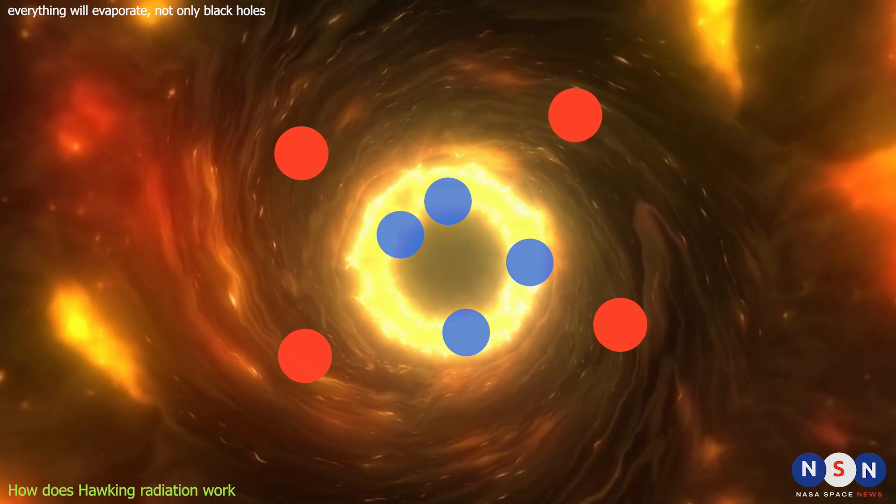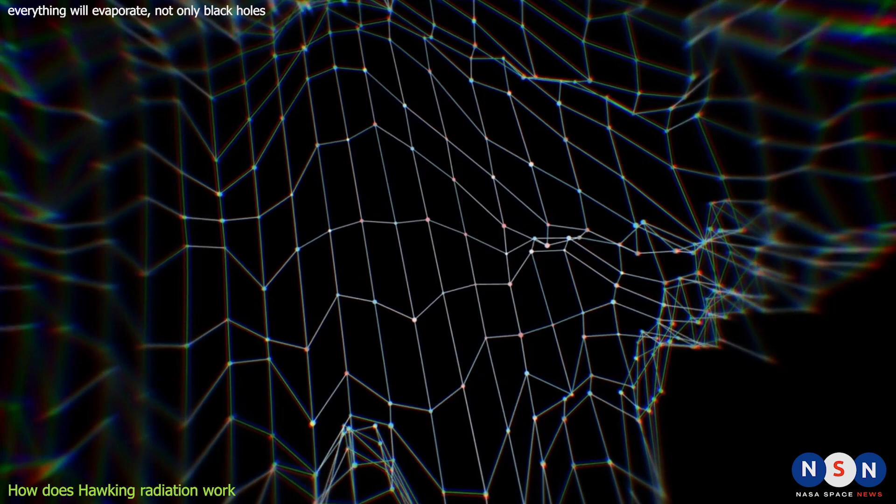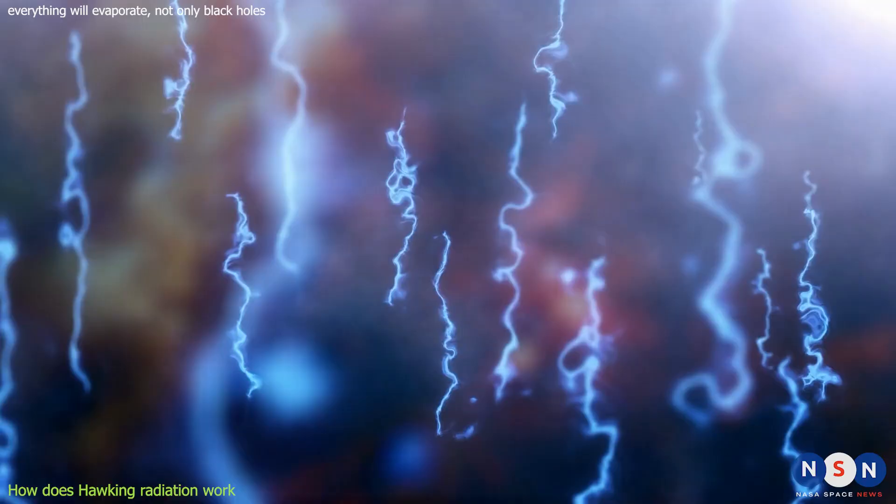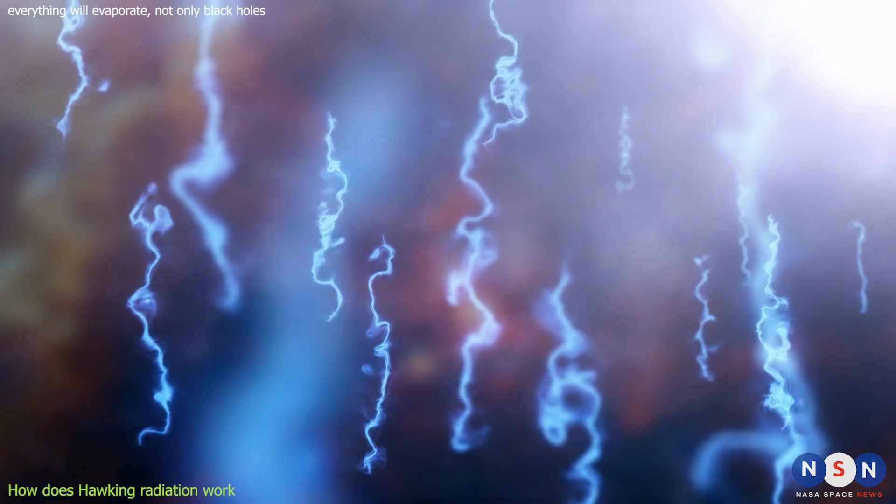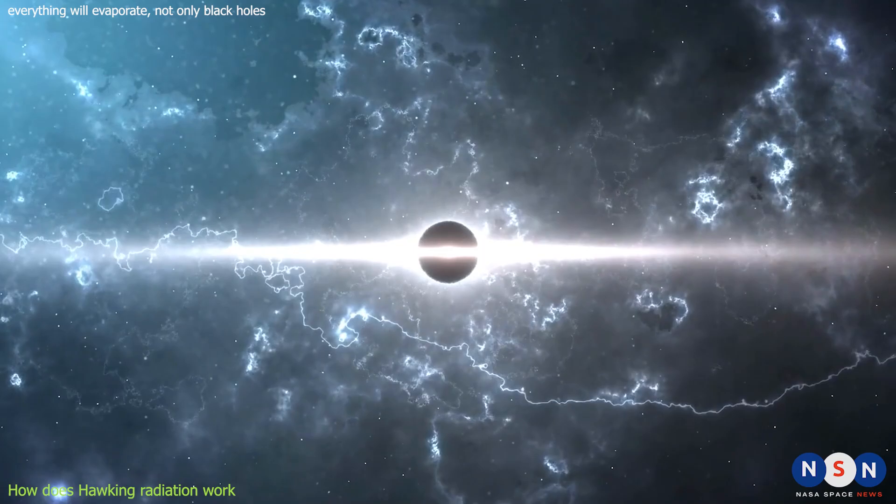One of the challenges of understanding Hawking radiation is that it requires a theory that can combine quantum mechanics and gravity in a consistent way. Such a theory is called quantum gravity, and it is one of the holy grails of physics. However, we do not have a complete and accepted theory of quantum gravity yet. There are some candidates, such as string theory and loop quantum gravity, but they are still under development. Therefore, Hawking radiation remains a theoretical prediction that has not been confirmed or refuted by observation or experiment.